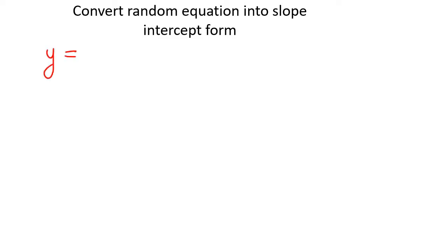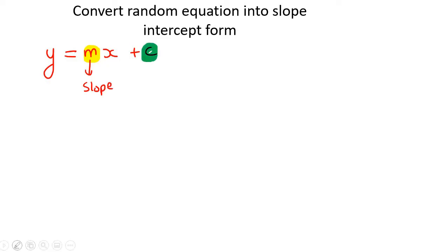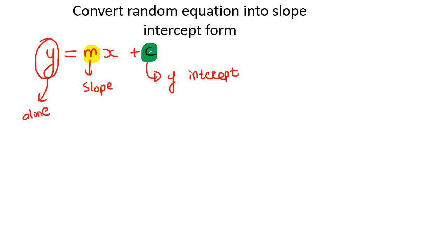In this lesson, I am going to teach you how to take a random equation and turn it into slope-intercept form. Remember that slope-intercept form is when the equation is written where this part is called the slope and this part is called the y-intercept. What you must remember is that the y-value must always be alone — that is so important.